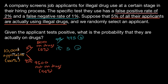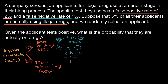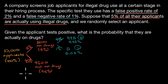What percent of our original applicant pool is on drugs and tests positive? Well, 495 over 10,000 is 4.95 percent. What percent is on drugs but tests negative? That's 5 out of 10,000, which is 0.05 percent. Another way to get these percentages: multiply five percent by one percent to get 0.05 percent, or multiply five percent by ninety-nine percent to get 4.95 percent.